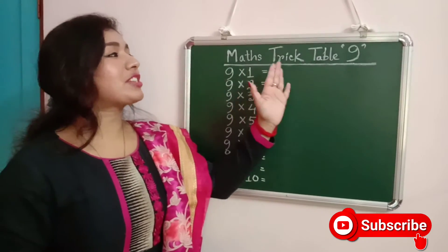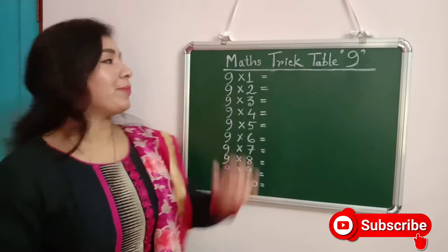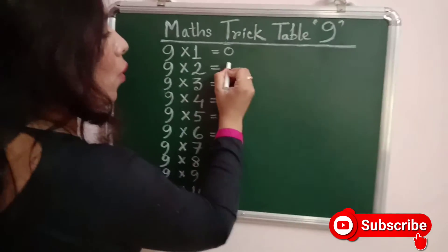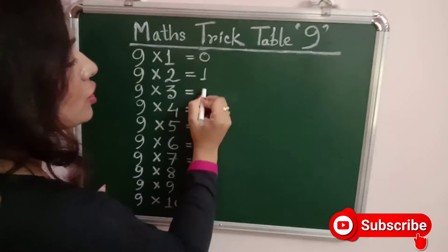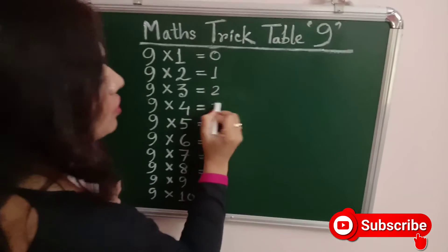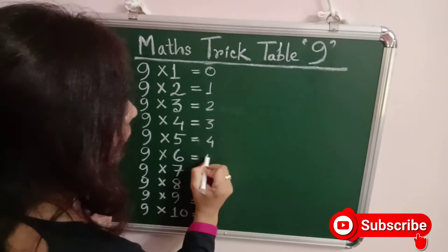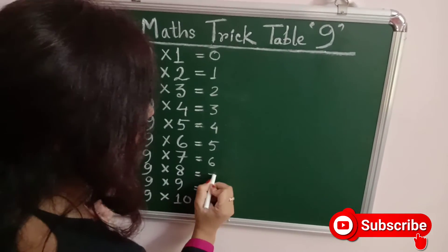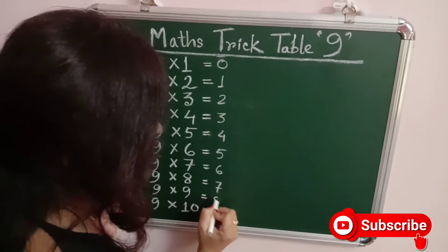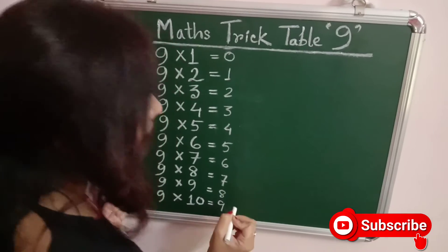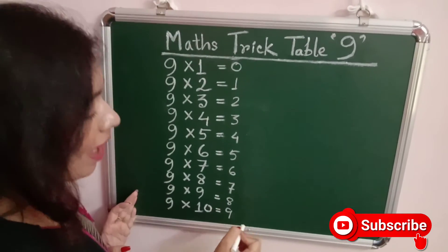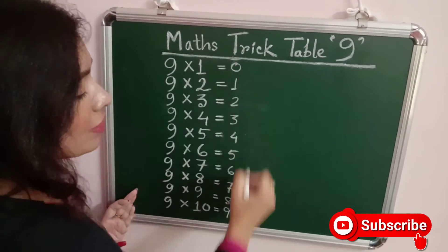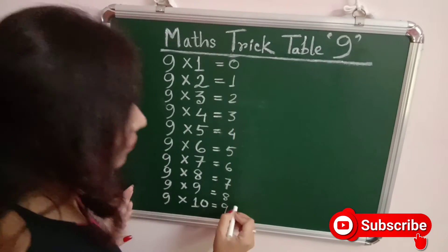This is math trick table 9. At first we can write 0, 1, 2, 3, 4, 5, 6, 7, 8, 9. After that we can write 9 from down to up.